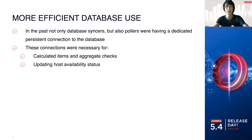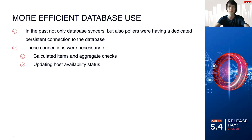In the past, in earlier versions, not only database sinkers but also pollers and some other processes of Zabbix were having a dedicated persistent connection to the database. They were necessary for calculated items and aggregate checks, since these are based on queries to the database and particular history tables. This was also necessary to update host availability status. All kinds of pollers — pollers, unreachable pollers, JMX pollers, and also the FMI manager — would update host availability directly into the database. In some cases when proxies are used, host availability would also be updated by the proxy puller in case of passive proxies and trapper.